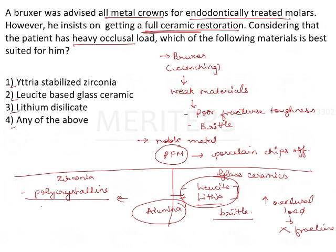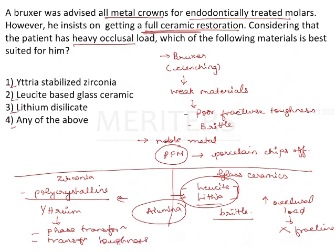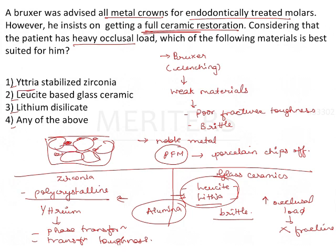Coming to zirconia — zirconia also has stability issues, but when it is stable at room temperature in a metastable state, you use yttrium for phase transformation, which is known as transformation toughening. You don't have to do it as a clinician; it is already done by the manufacturer. In between the zirconia crystals, yttrium molecules are interspersed so that there is no crack propagation. Yttria makes it more rigid.